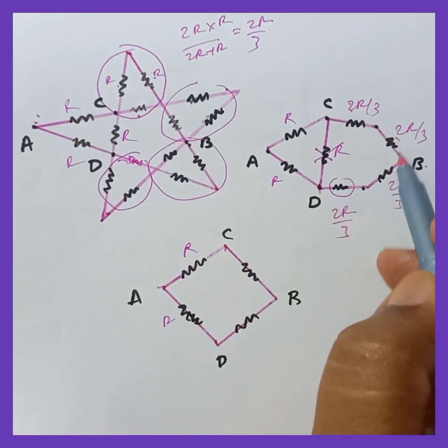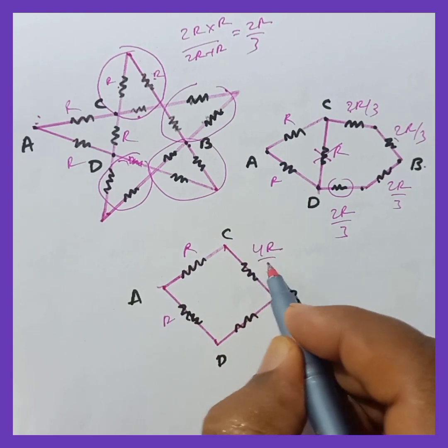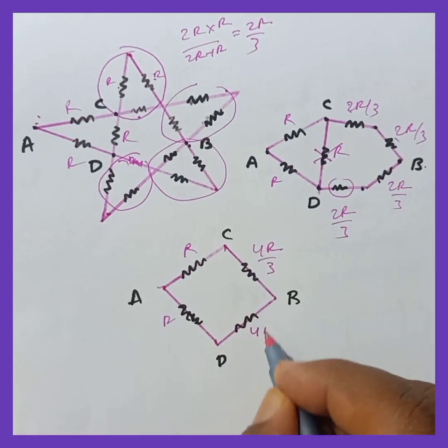Then 2R by 3, 2R by 3, they are in series. So we can write them as 4R by 3. Again 2R by 3 plus 2R by 3 becomes 4R by 3.